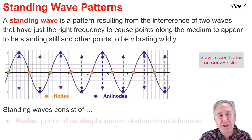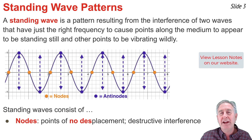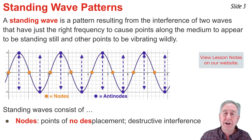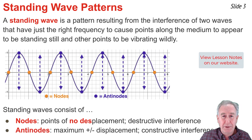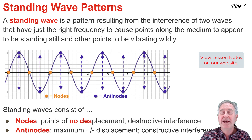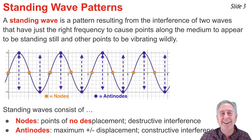Those points that are standing still are known as nodes — they can be remembered as points of no displacement. They are formed at locations where the red wave and the blue wave interfere in a destructive manner. The points that are vibrating wildly are known as antinodes. They vibrate from a large positive displacement to a large negative displacement and are formed at locations where the red wave and the blue wave always constructively interfere.